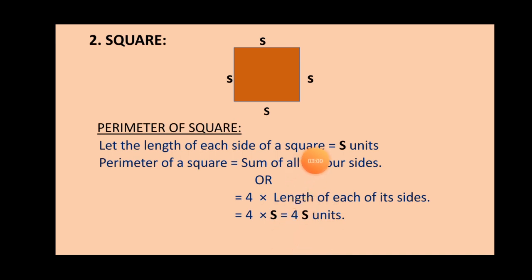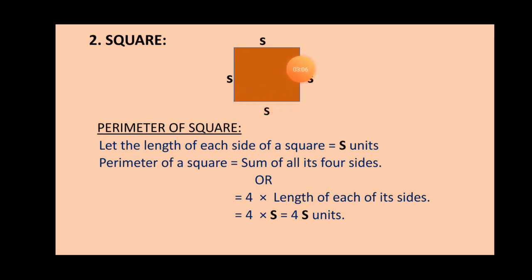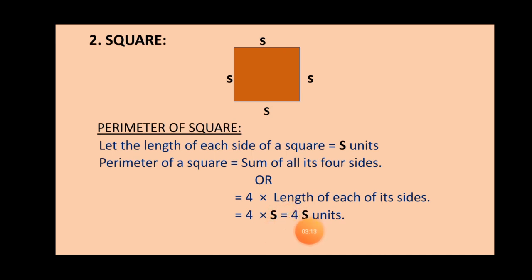Since we have represented the length of each side using a variable S, we multiply it by four. So the perimeter of a square equals 4S units.